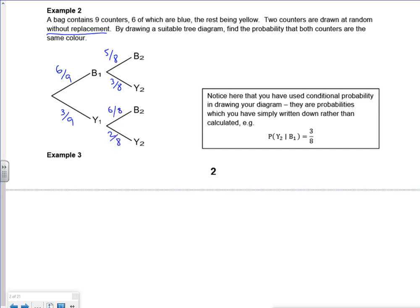I want the probability that both counters are the same color. If it's the probability of the same color, then it would be 6 out of 9 times 5 over 8 from both being blue, or 3 out of 9 times 2 out of 8 from both being yellow, and that would give us a half.